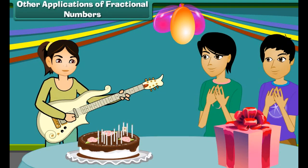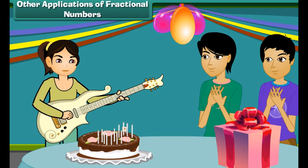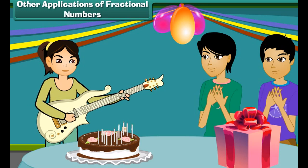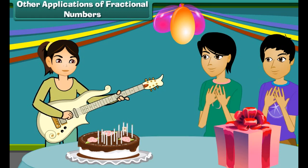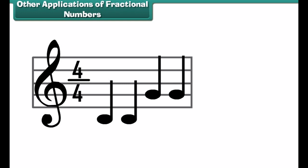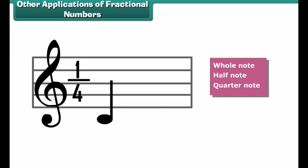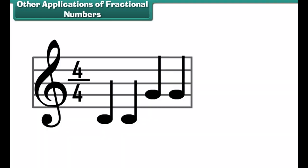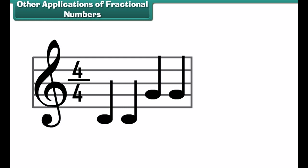Can we divide time into fractions? Yes. Look at this clock. The hours would be the whole numbers and the minutes would be the fractions. Since there are sixty minutes in an hour, each minute is one by sixty. So twenty minutes would be equal to twenty divided by sixty, which is equal to one-third.